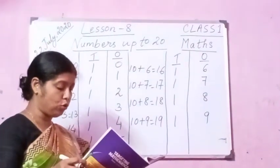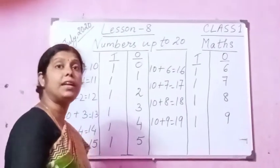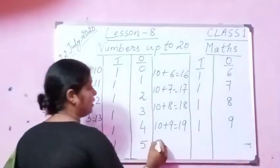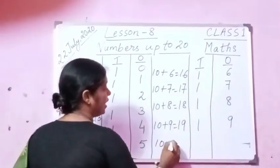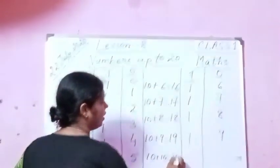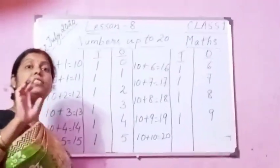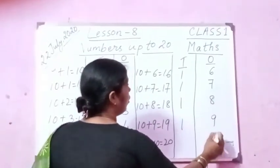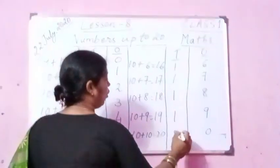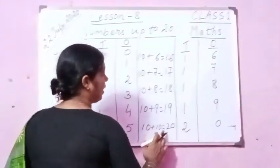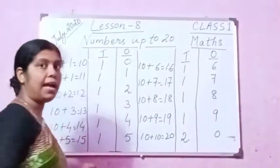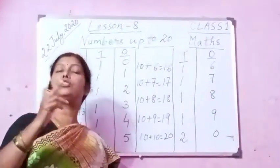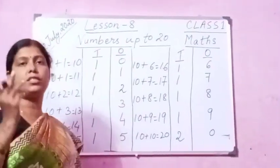Now let us come to 20. How are we going to write 20? 10 plus 10 equals 20. 10 and 10 more equals 20. In the ones place you see 0, and in the tens place 2. That means 2 tens and 0 ones. 2 tens means 20 and 0 ones means 0. So 20 plus 0 equals 20.